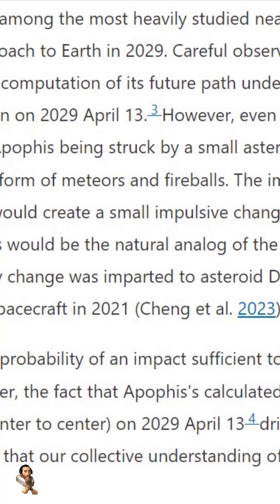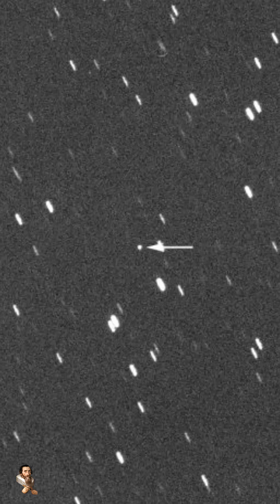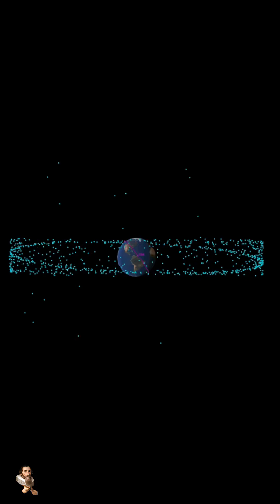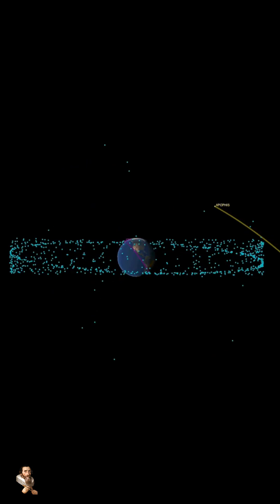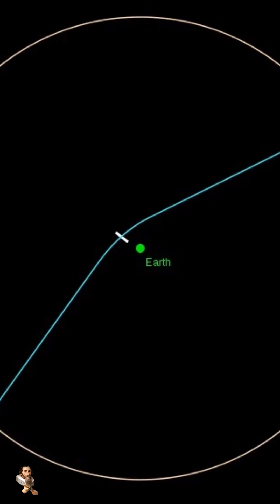We won't be able to observe Apophis until 2027. A new study has shown that if this asteroid was struck by a much smaller object, just like the ones that frequently and unpredictably strike the Earth, the impact could have serious consequences.